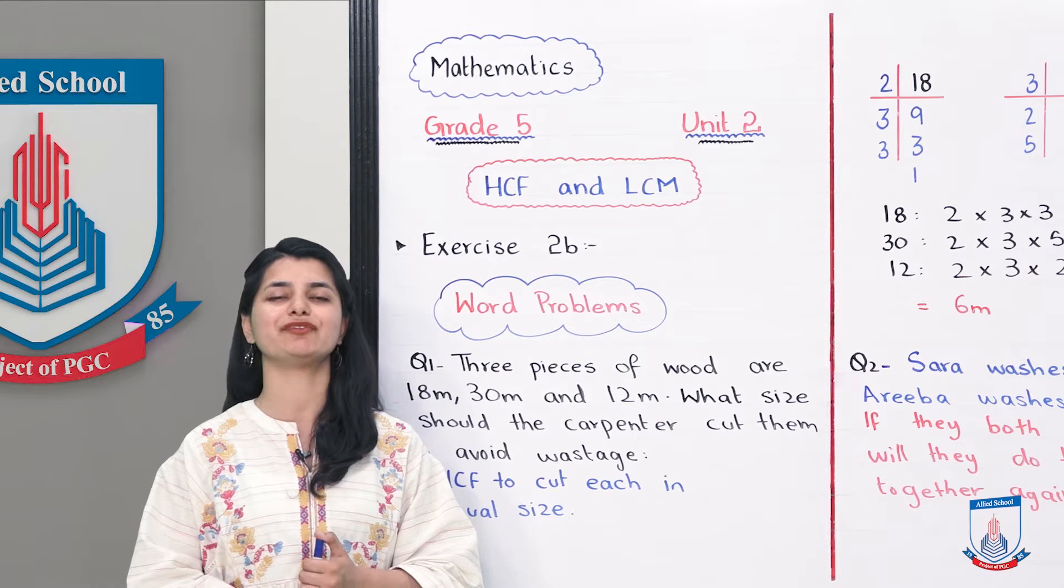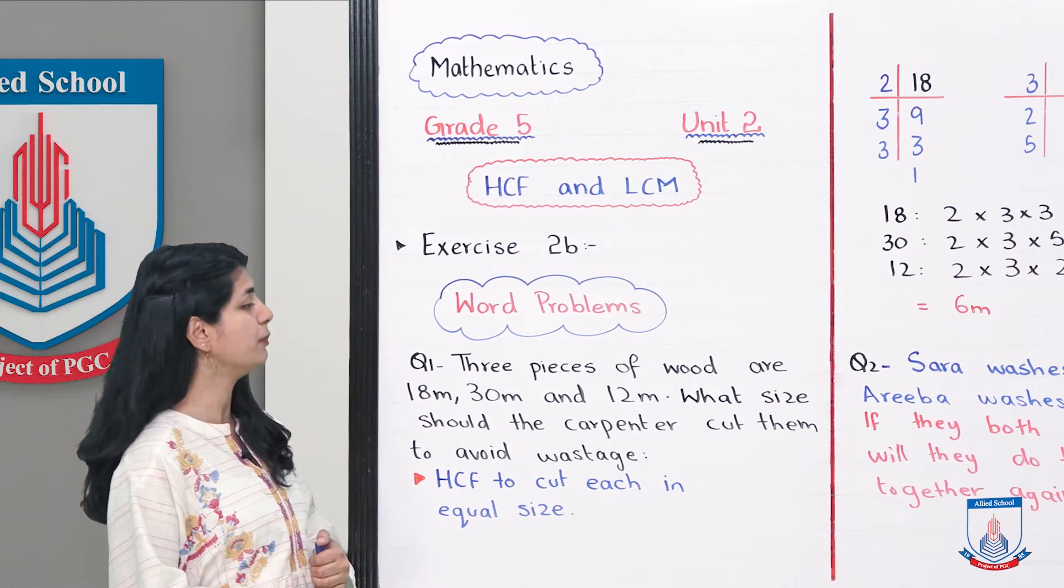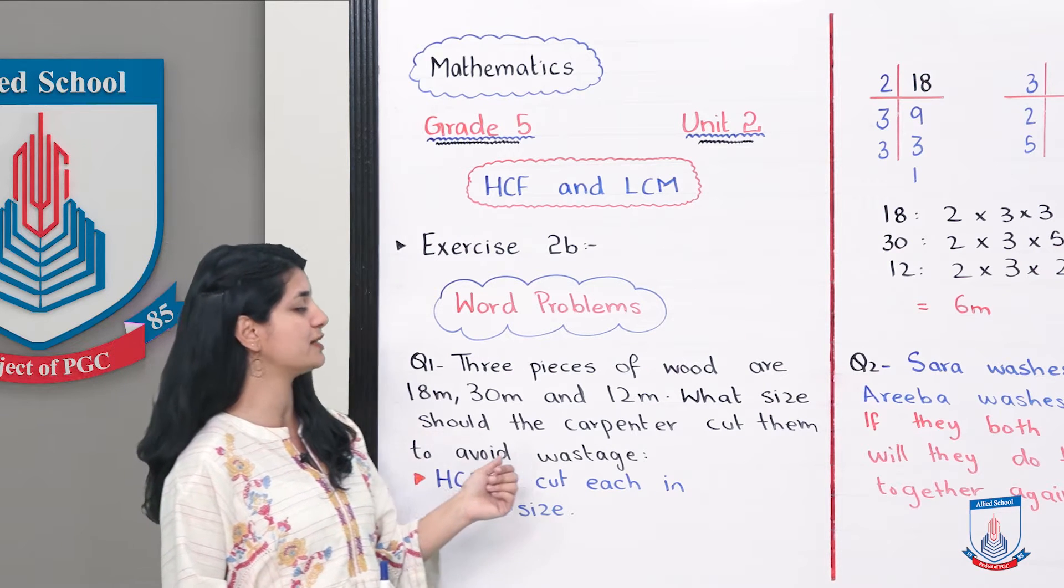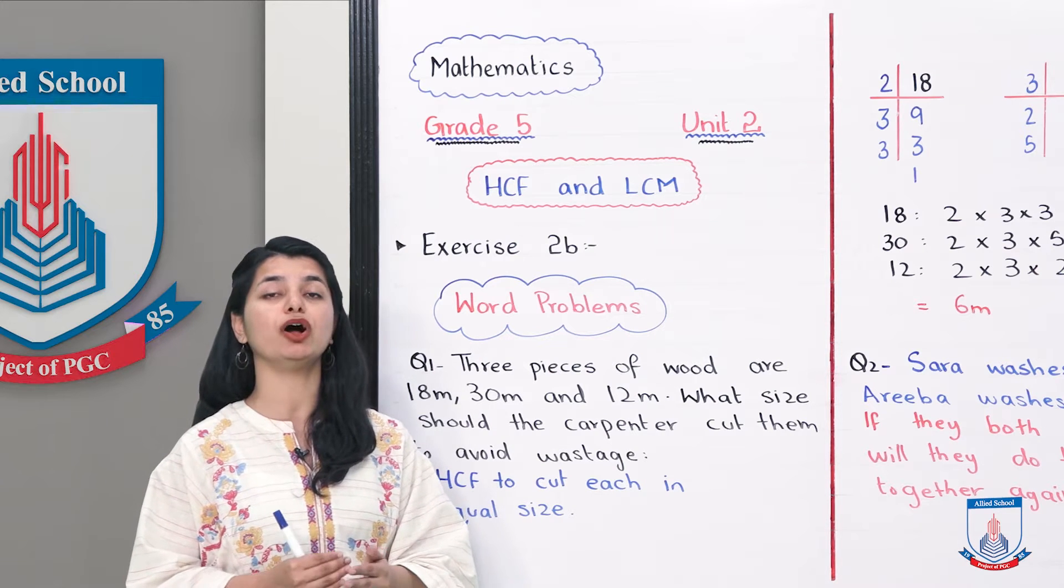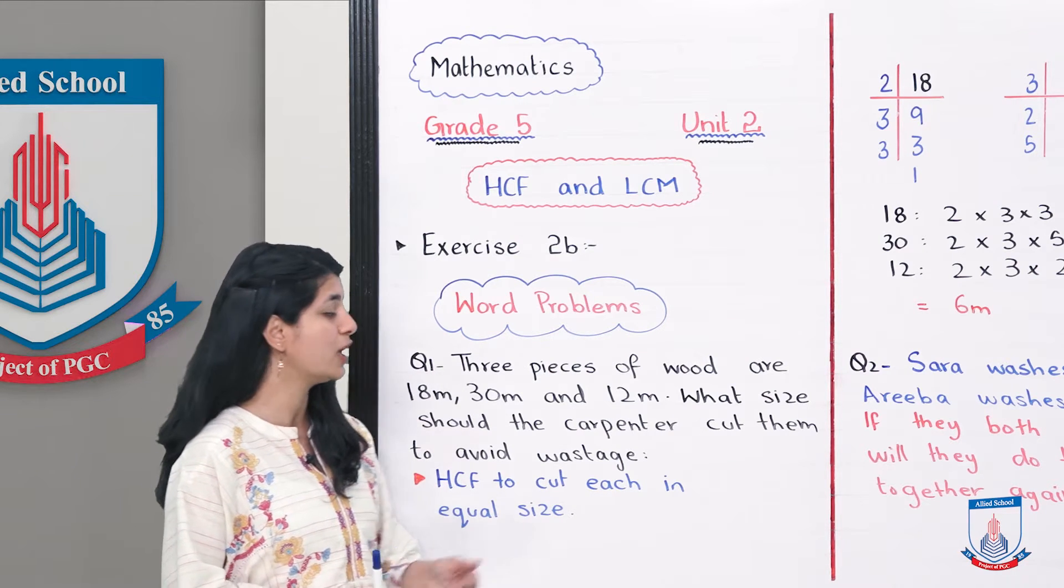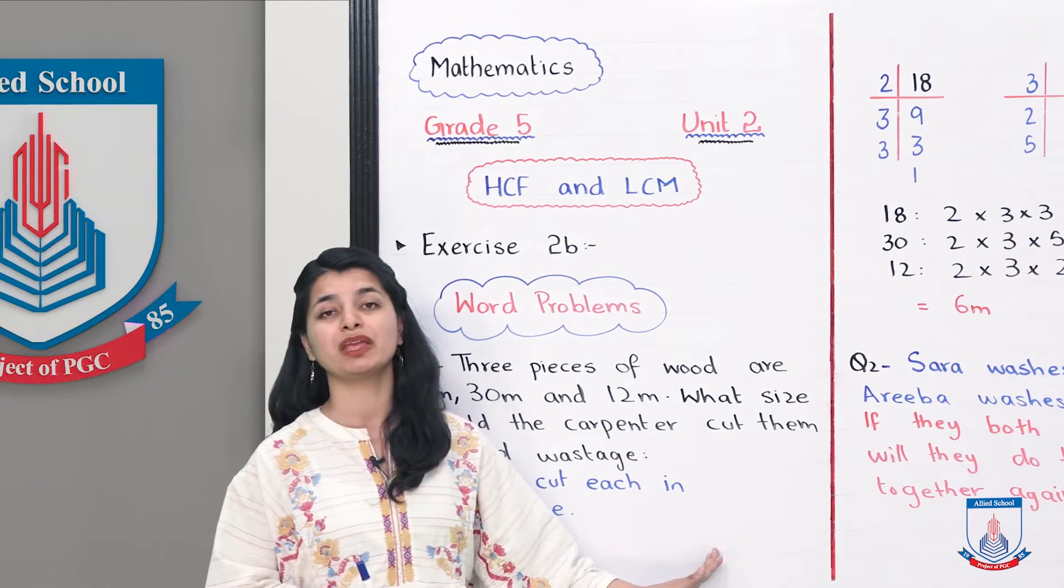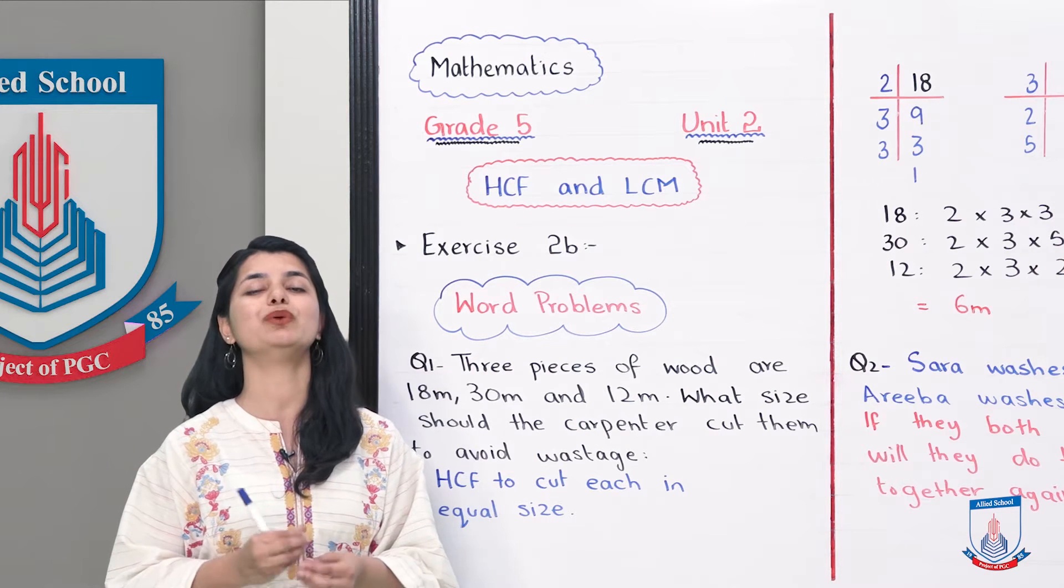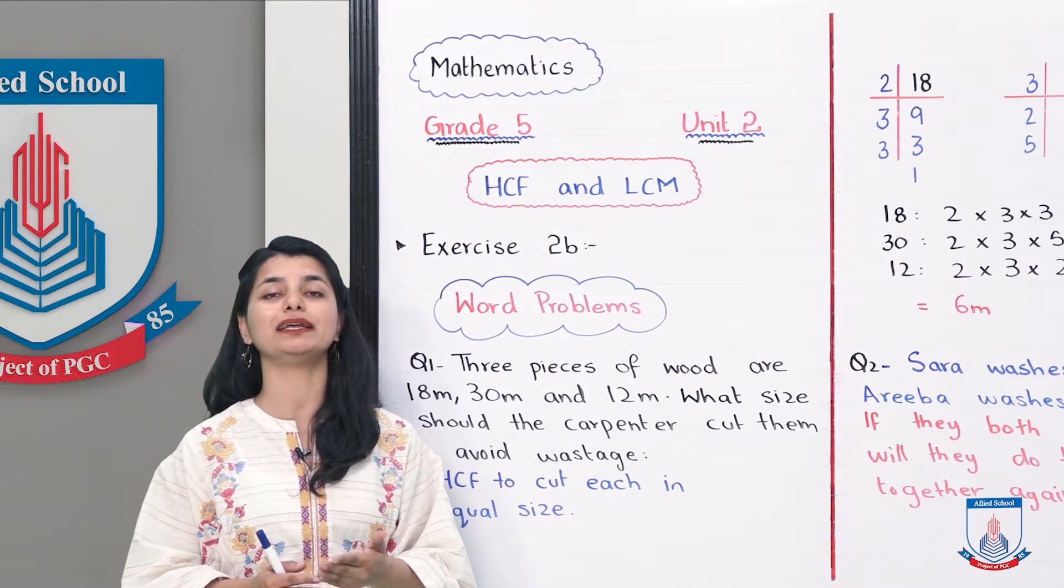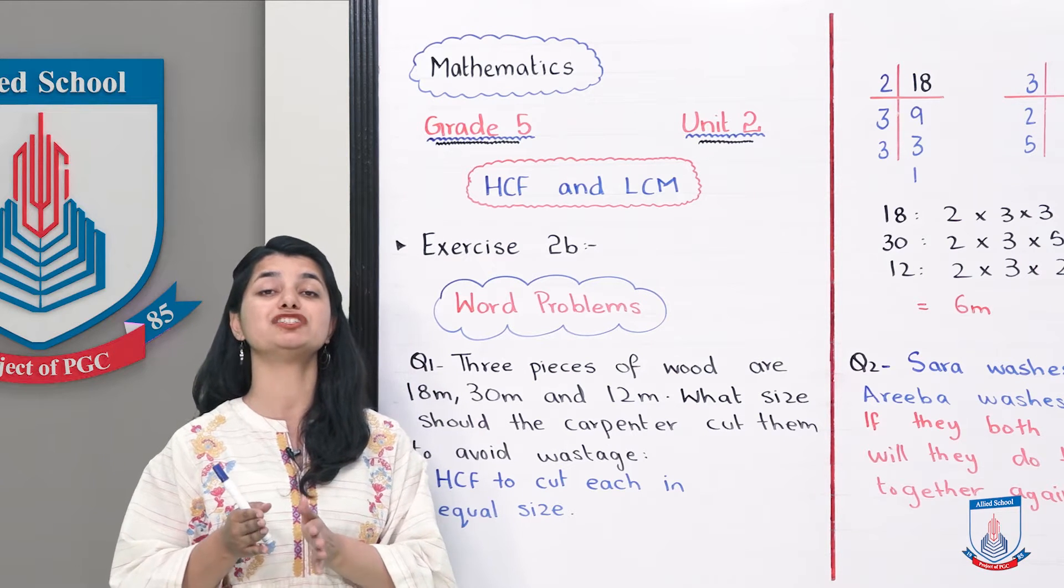The first question is: Three pieces of wood are 18 meters, 30 meters, and 12 meters respectively. The carpenter wants to cut all three of them in equal sizes. What size should the carpenter cut them to avoid wastage? There is a carpenter who has three different pieces of wood, but he wants to cut them in equal size so there will be no wastage and all three will be distributed equally.